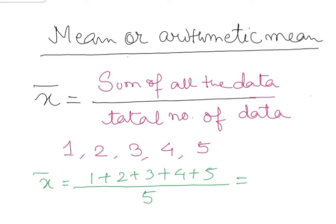So overall if I add them, how much will I get? 2 plus 1 is 3, 6, 10, 15, isn't it? 15 by 5 is 3. So my arithmetic mean is 3, isn't it?